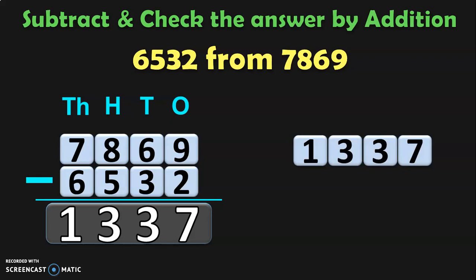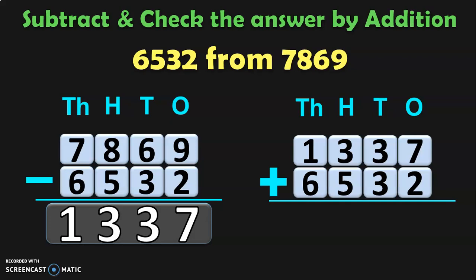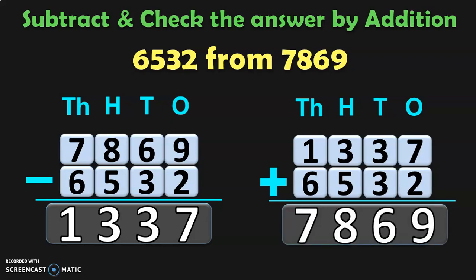The rule is: when we add this difference to the smaller number — which is 6532 in this case — we should get the greater number. In the 1s place, 7 plus 2 is 9. In the 10s place, 3 plus 3 is 6. In the 100s place, 3 plus 5 is 8. And in the 1000s place, 1 plus 6 is 7. So you get 7869, which is the bigger number — showing that the subtraction is correct.